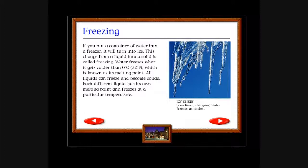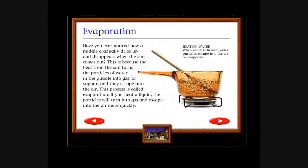Freezing: If you put a container of water into a freezer, it will turn into ice. This change from a liquid into a solid is called freezing. Water freezes when it gets colder than 0°C (32°F), which is known as its freezing point. All liquids can freeze and become solids. Each different liquid has its own melting point and freezes at a particular temperature. Icy spikes: Sometimes dripping water freezes into icicles. Then it falls on you and kills you.